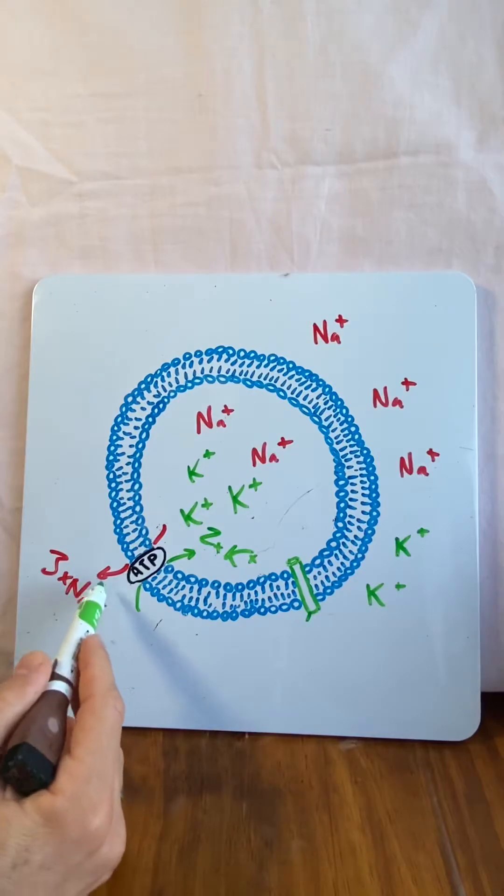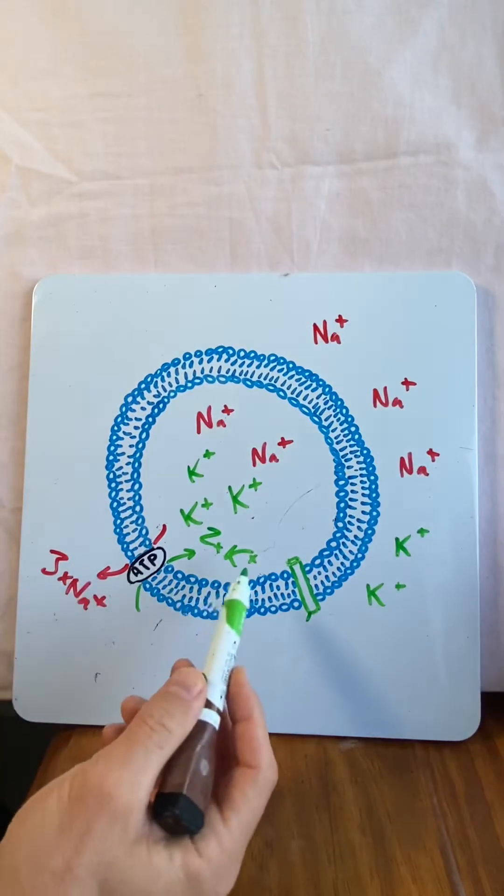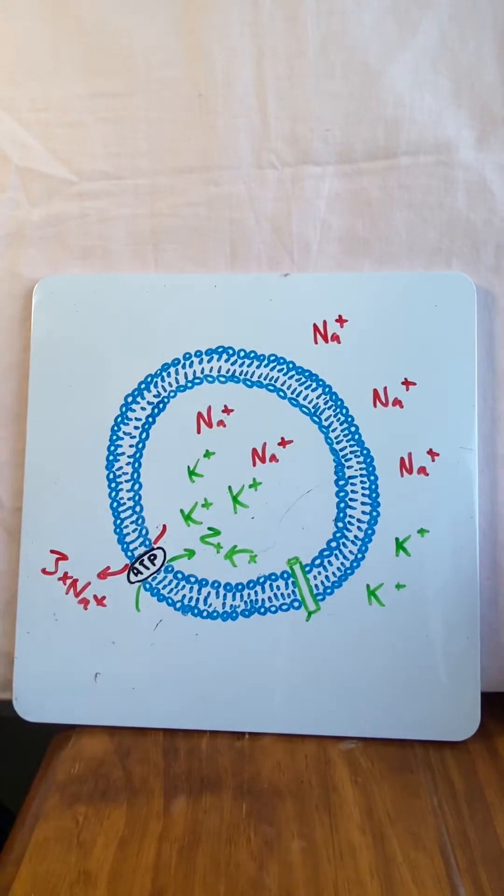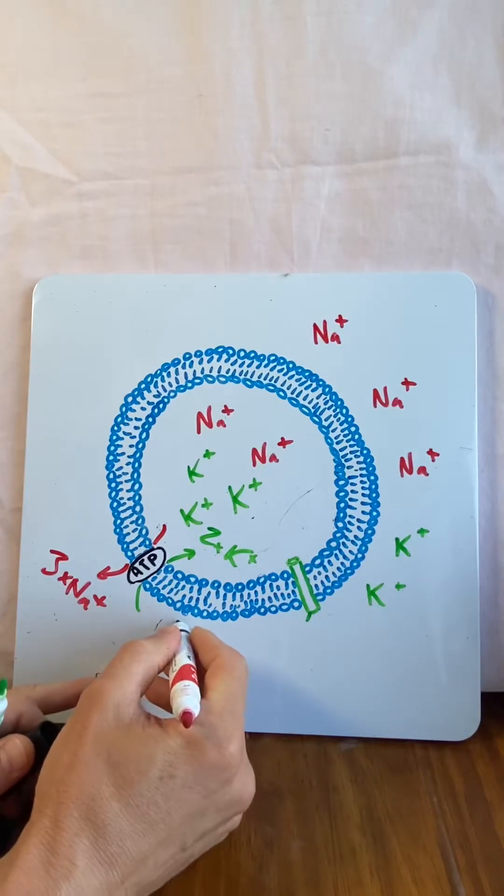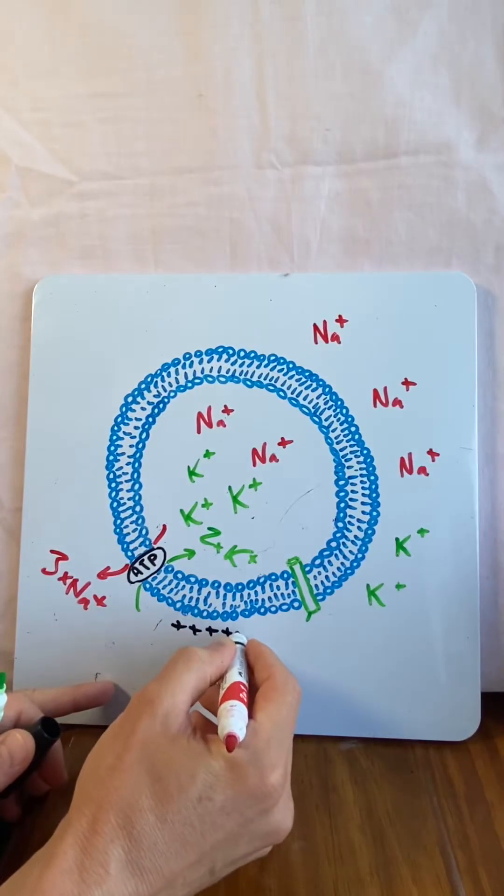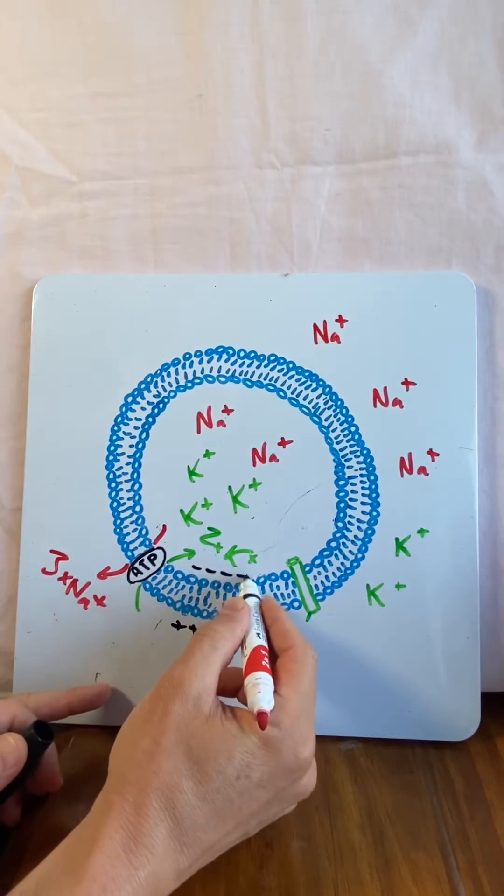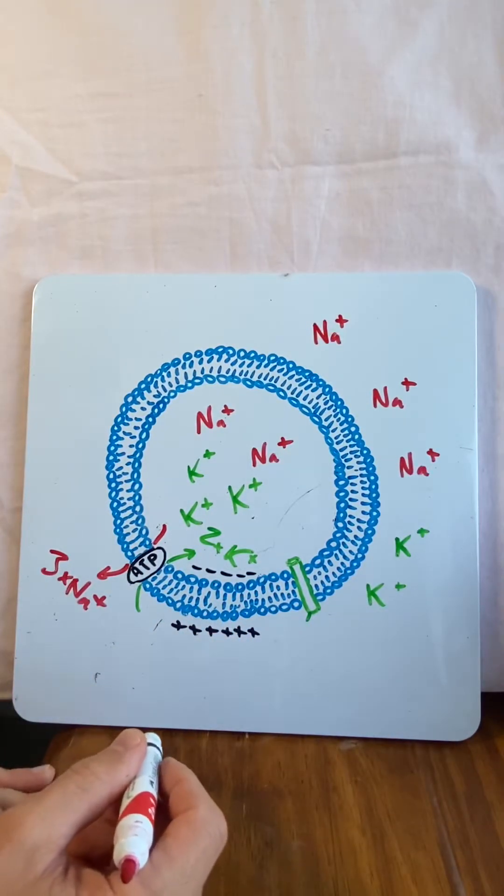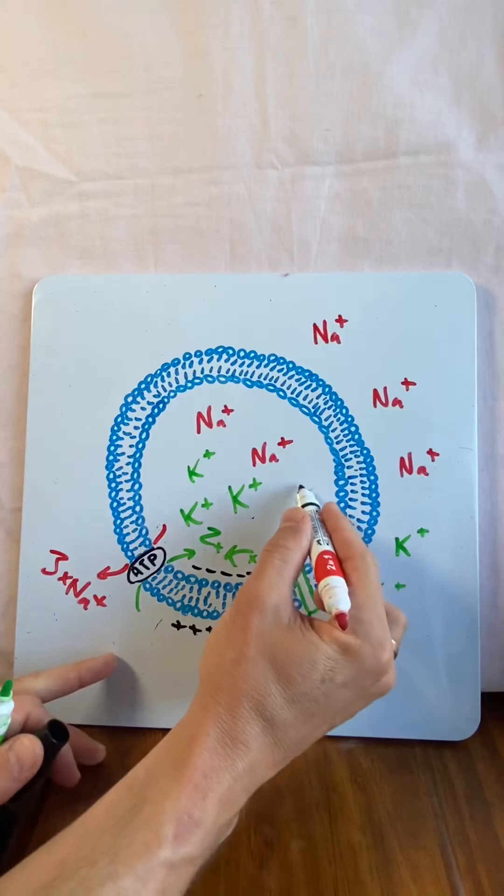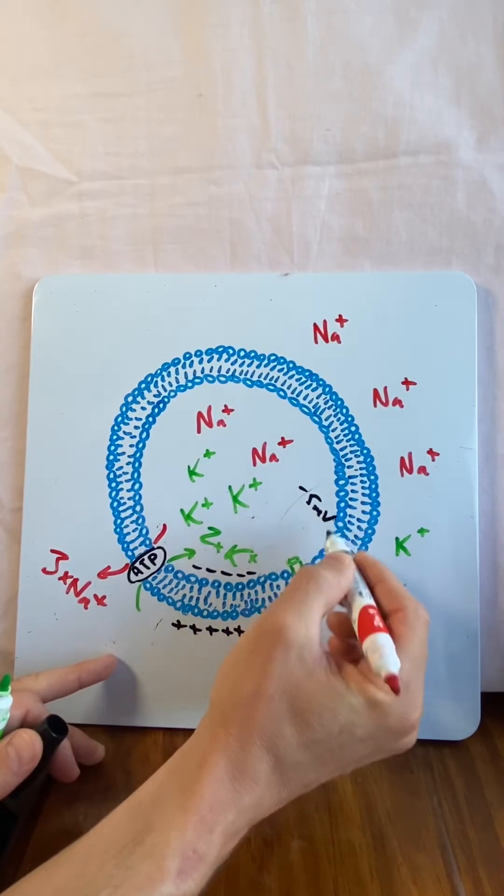But you can also see that we're throwing three positive things outside and only two positive things inside. What that means is it starts to be a little bit more positive outside the cell compared to inside the cell. Or you could say the inside becomes a little bit more negative compared to the outside. And this negative difference is around about negative five millivolts.